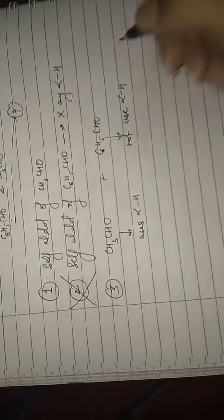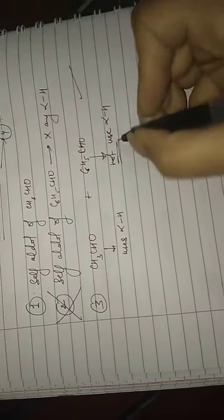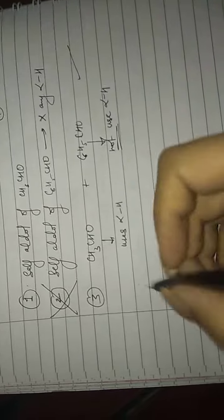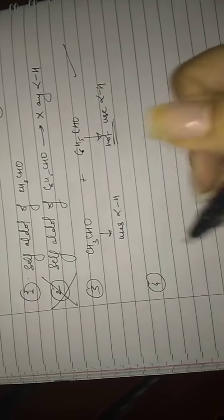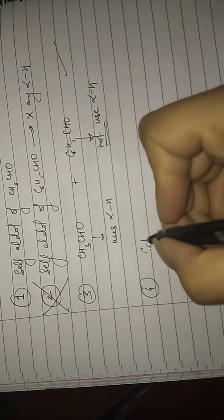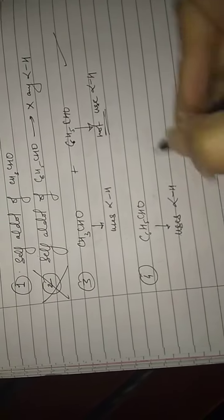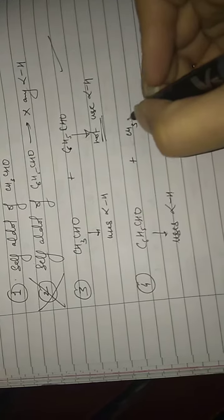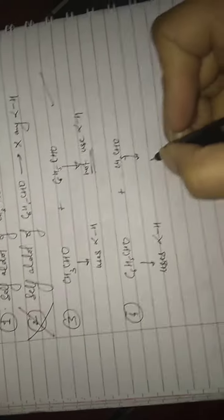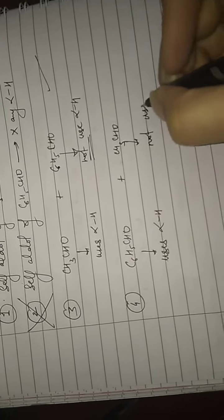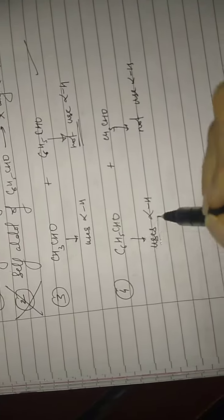Fourth product should have been formed when this uses alpha-H and this does not use alpha-H. But this does not have alpha-H, so this product again cannot be formed.